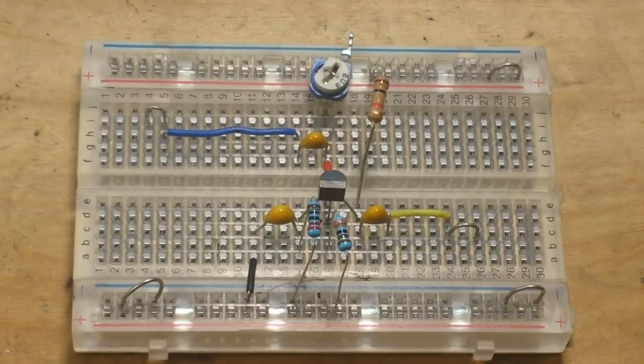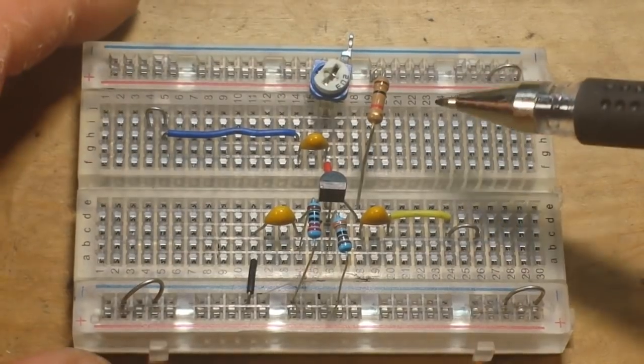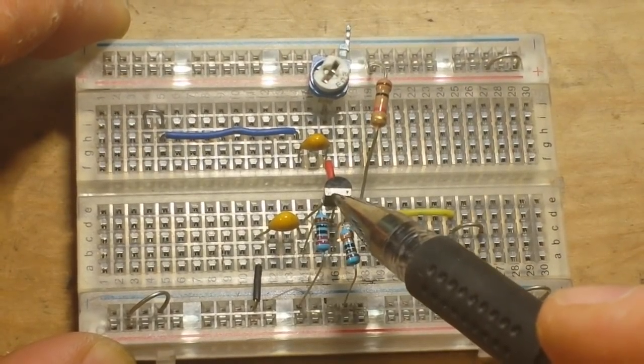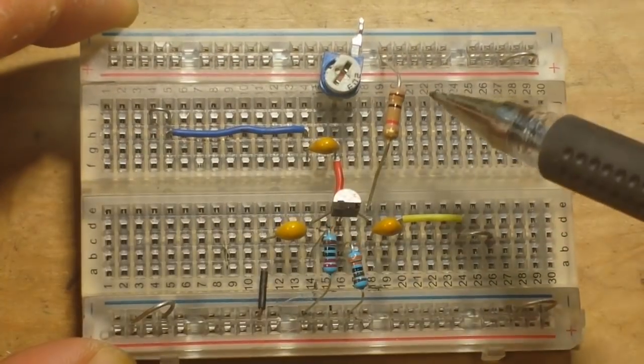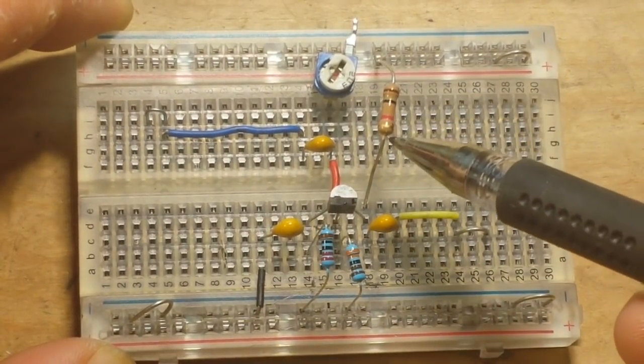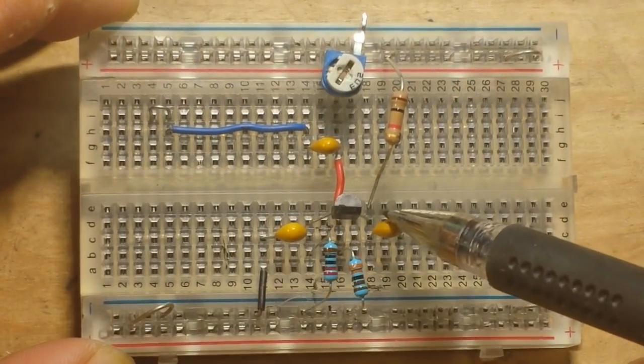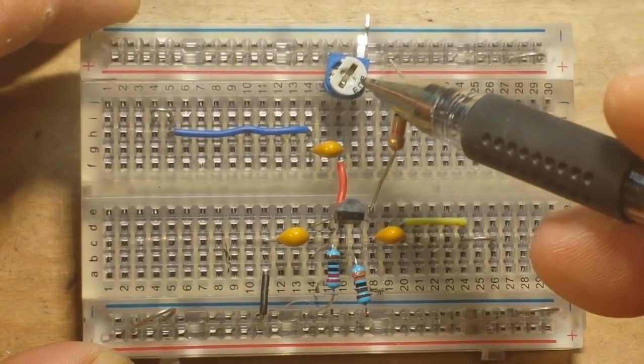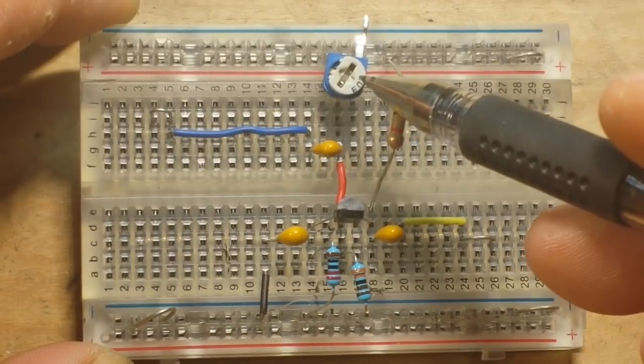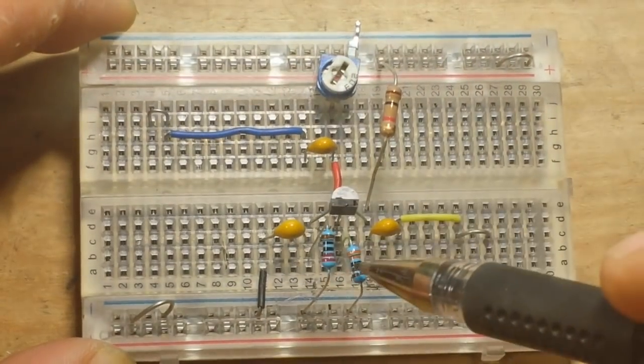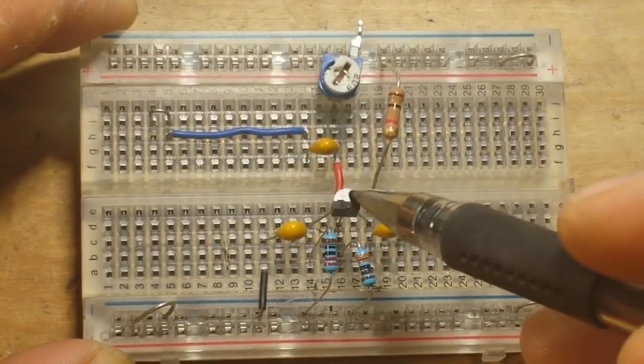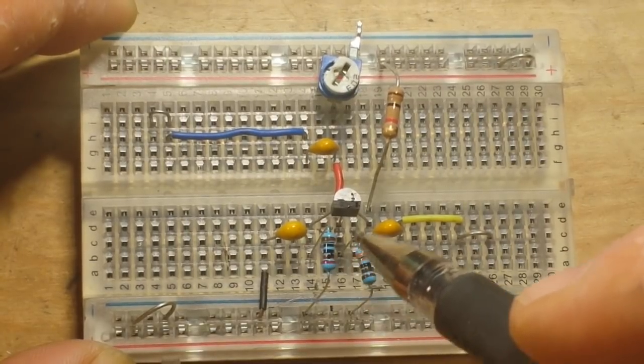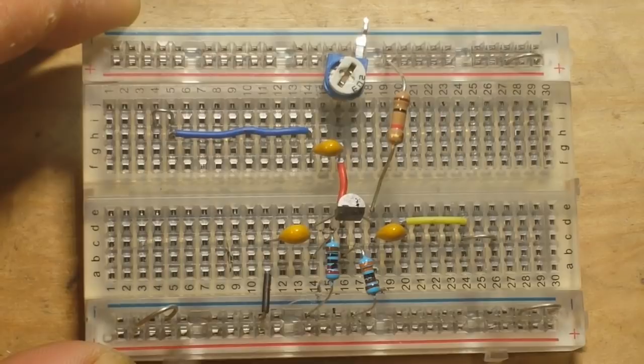So here is our 2N2222 transistor, and the pins from left to right are emitter, base, and collector. Here is our 1k collector resistor coming down to our collector. Now I didn't have a 20k resistor so I'm using a 20k pot and I'm just using the inner leg and the wiper. So there's our 20k pot there, and there's our 3.6k here giving us our voltage divider.